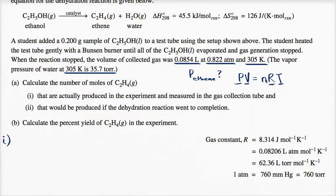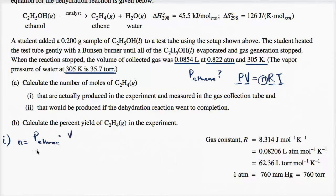To find the number of moles, we divide both sides of PV = nRT by RT, giving us: n equals the partial pressure of ethene times the volume, divided by R times T.